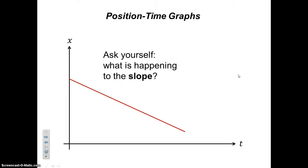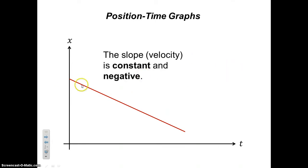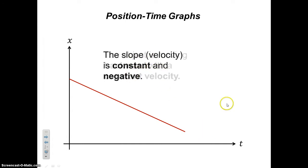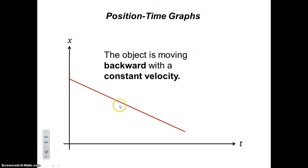What about something like this? The slope is constant because we have a straight line, and the slope is negative because it goes down. That means we have a constant negative velocity. If the velocity is negative, then that means it's going backward — that's what a negative velocity represents.